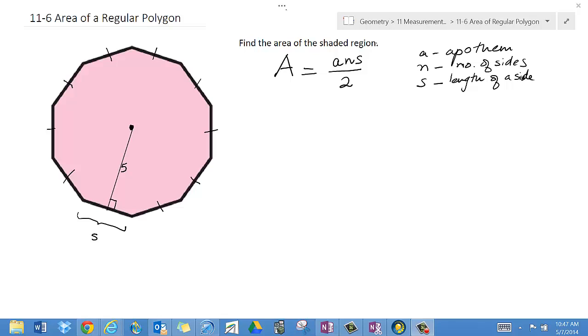In this problem, we are required to find the area of a regular polygon, and it seems to me that we are given the measure of a segment. The question is, what is it the measure of? Is it the apothem, the radius, or a side length?